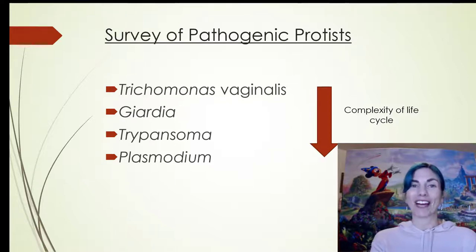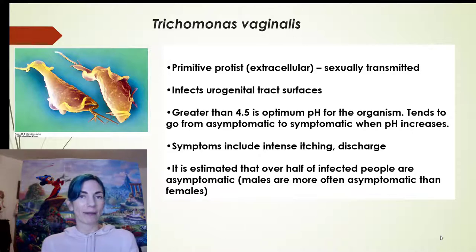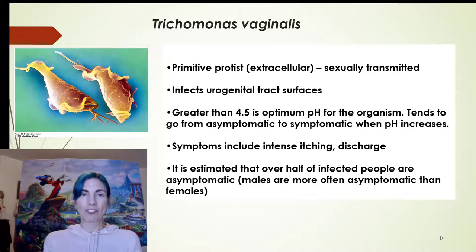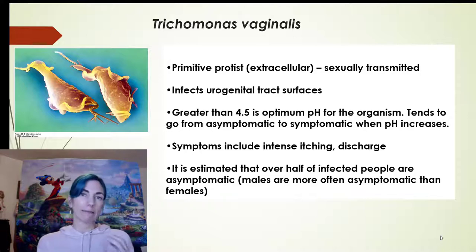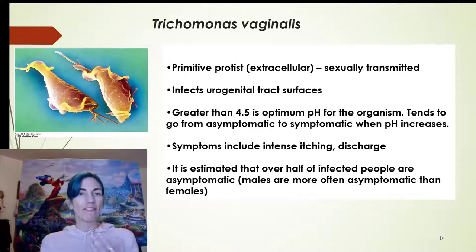Trichomonas vaginalis is a sexually transmitted protist, and despite the name vaginalis, it infects both males and females. In females it infects the vagina and the cervix; in males it infects the urethra largely. This is often asymptomatic. Unlike gonorrhea and chlamydia, asymptomatic infections are more common in males rather than females — males don't show symptoms very often, although they can. Females that are infected will more often become symptomatic.